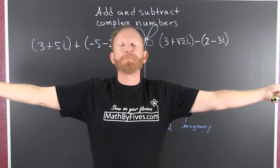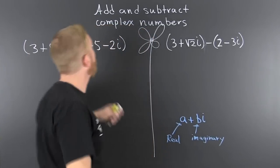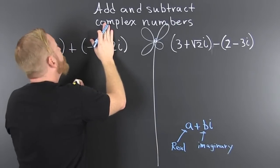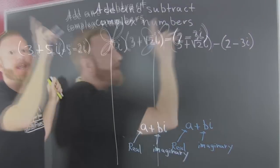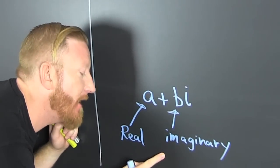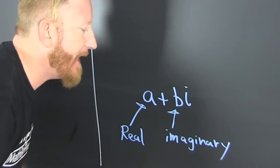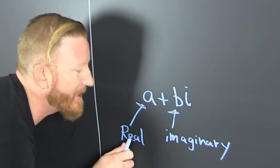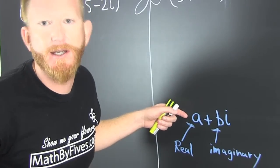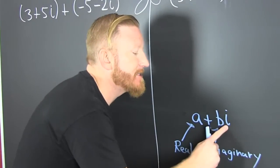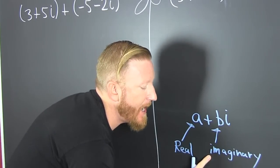Adding and subtracting complex numbers. First I need to talk about what a complex number is. A complex number is a number in the form a plus b i. I'm gonna take the real part, that's the part without the i. The i is the label of the imaginary part.